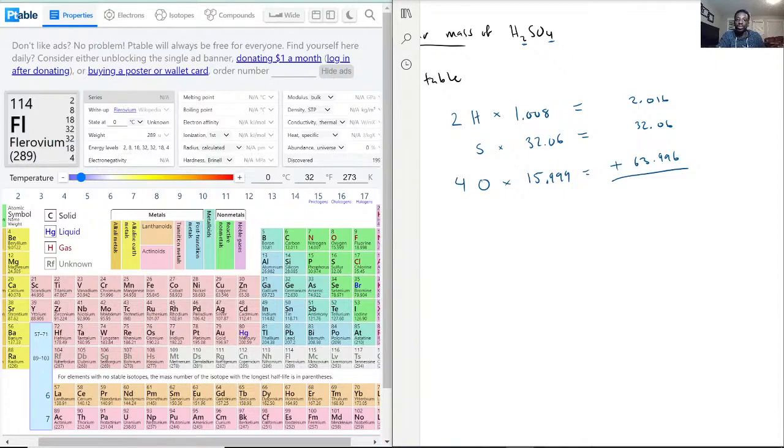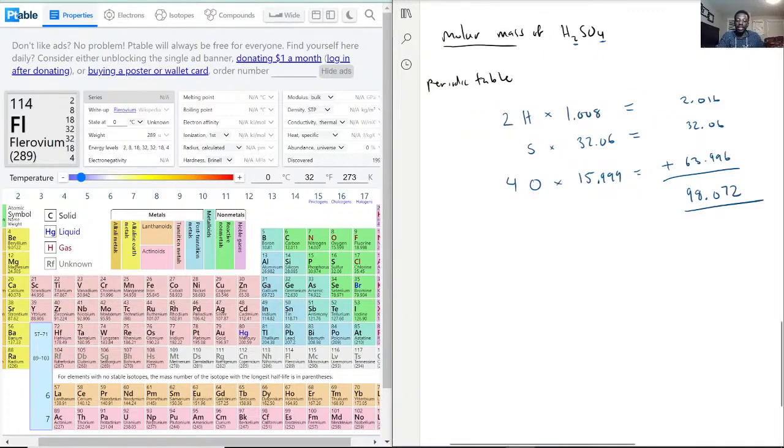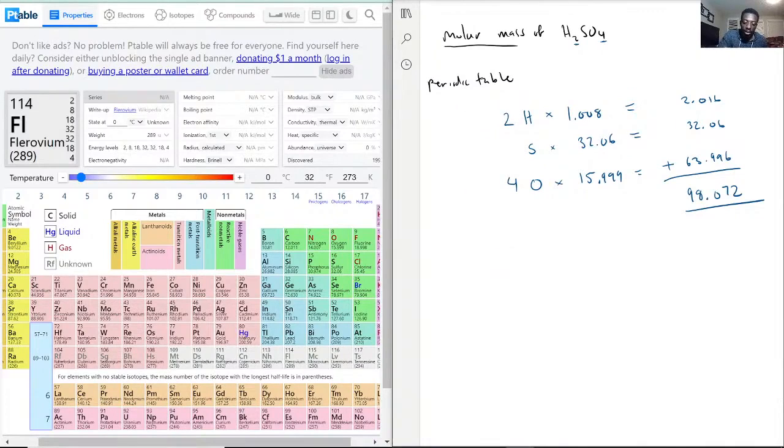And then, now that we have all the constituents, we add them together to get the total, and that will be its molar mass. So we add them and we get 98.072. This is the molar mass, and the way we write that: we put 98.072 grams per mole of H2SO4.